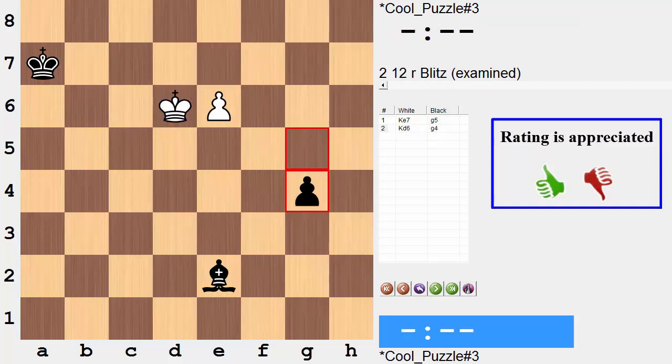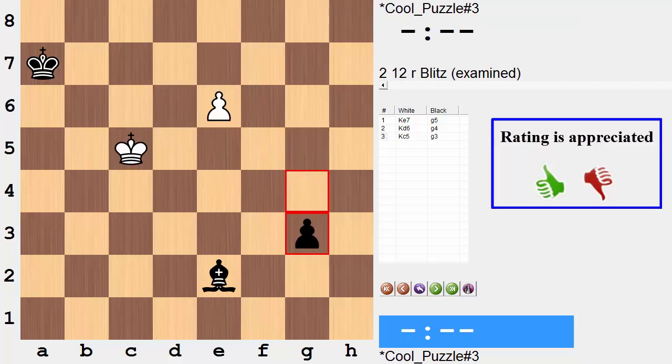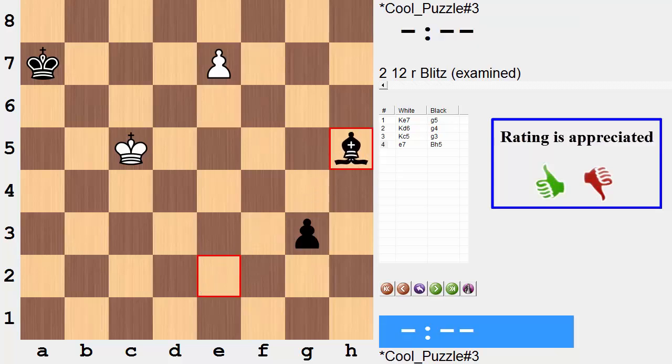Notice, after g4, if we are playing Kc5 at this point here, instead of pushing our pawn, notice how after Kc5, g3 creates a new door, a new diagonal for the bishop. Now after e7, there's simply bishop here. There will be no tempo against the bishop, and black is the one who would win.